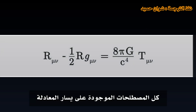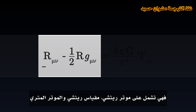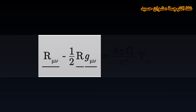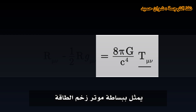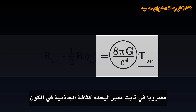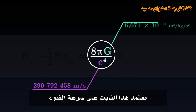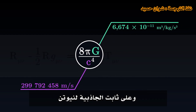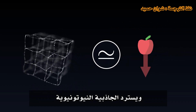Usually, the Einstein equation takes the following form. All terms to the left of the equation represent the geometry of space-time; they involve the Ricci tensor, the Ricci scalar, and the metric tensor. The term to the right corresponds to the content — it is simply the energy-momentum tensor multiplied by a certain constant which determines the intensity of gravity in the universe. This constant depends on the speed of light and on Newton's gravitational constant.